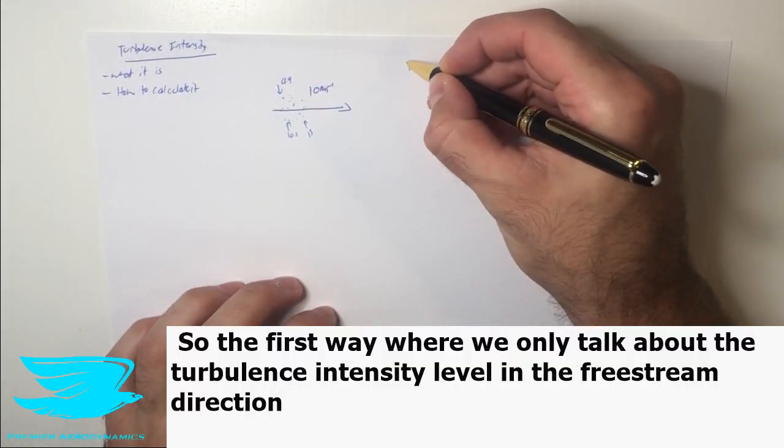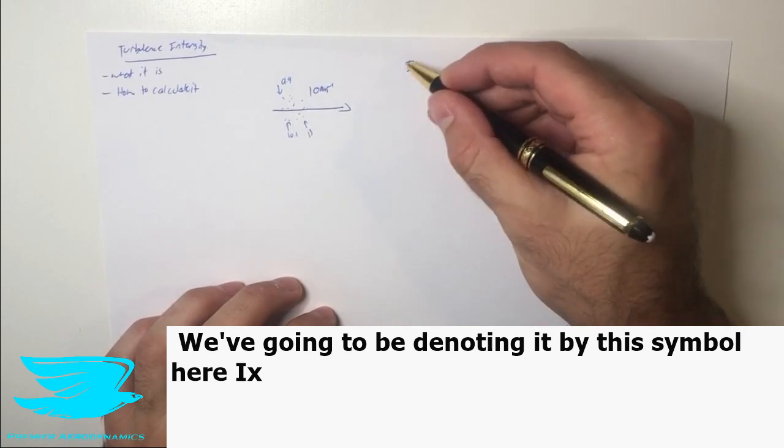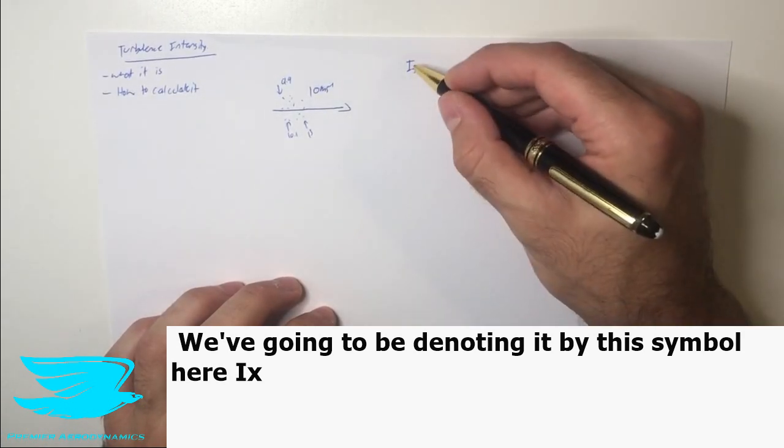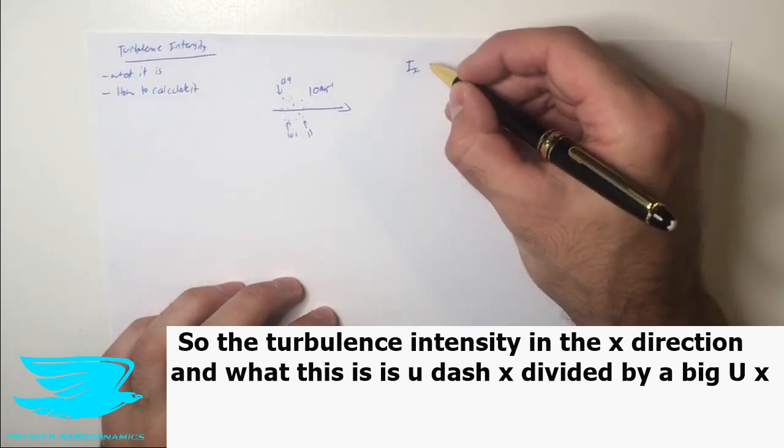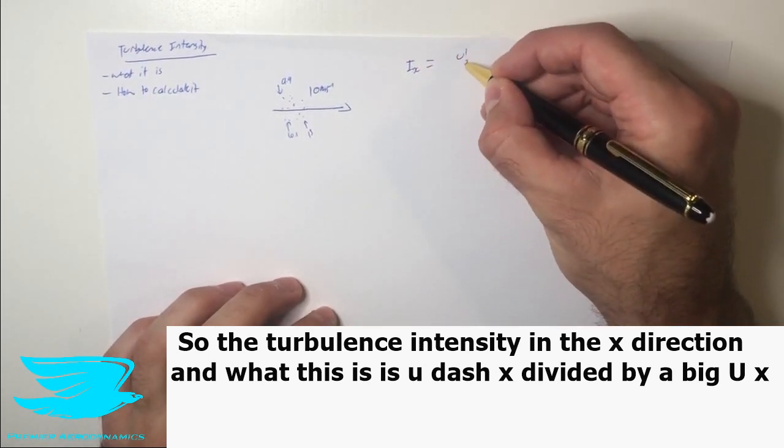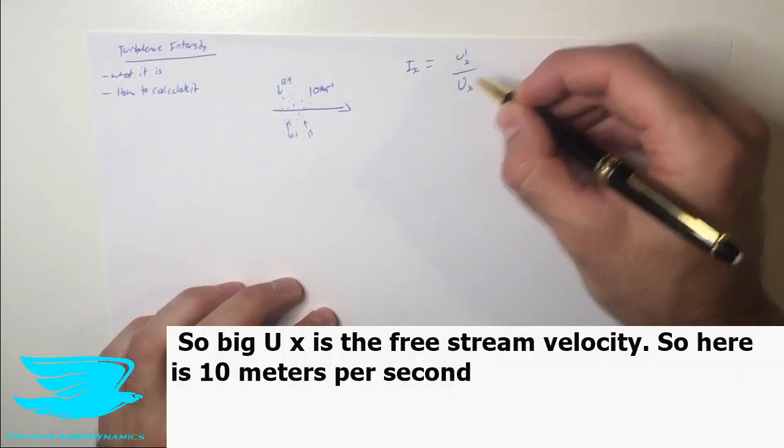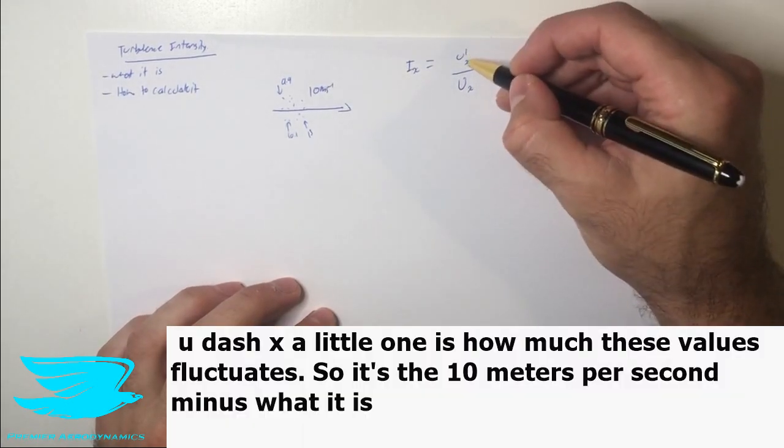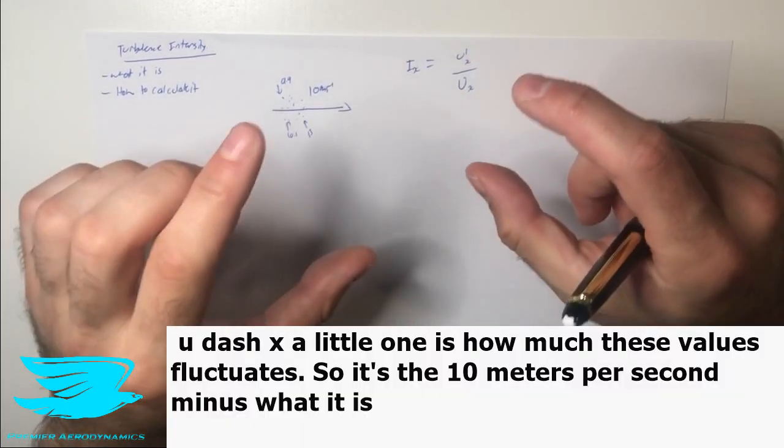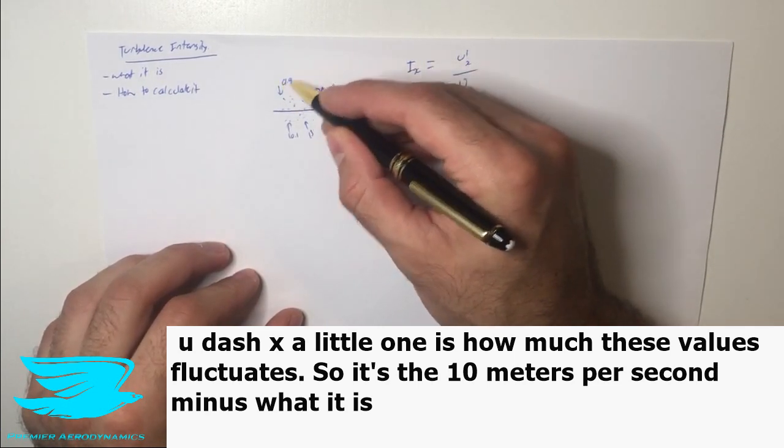So the first way, when we only talk about the turbulence intensity level in the freestream direction, we're going to be denoting by this symbol here, IX. So the turbulence intensity in the X direction. And what this is, is u dash X divided by big U X. So big U X is the freestream velocity. So here is 10 meters per second. U dash X, the little one, is how much these values fluctuate.